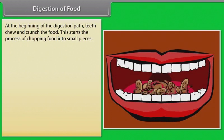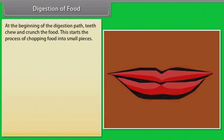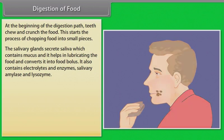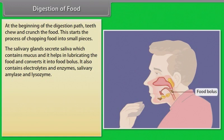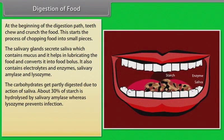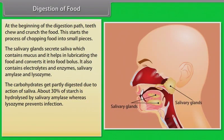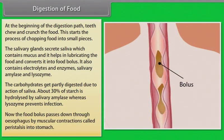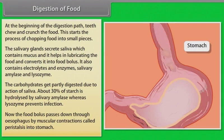At the beginning of digestion, teeth chew and crunch the food, chopping it into small pieces. The salivary glands secrete saliva containing mucus, which lubricates the food and converts it into a food bolus. Saliva also contains electrolytes, salivary amylase, and lysozyme. About 30% of starch is hydrolyzed by salivary amylase, while lysozyme prevents infection. The food bolus then passes down through the esophagus by muscular contractions called peristalsis into the stomach.